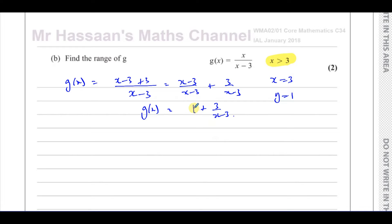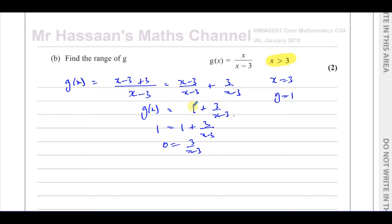y can't equal 1. If y equals 1, you have 1 equals 1 plus 3 over (x minus 3). When you subtract 1 from both sides, you end up with 0 equals 3 — a contradiction. So that's why y can't equal 1. Anytime you have this improper type of fraction, whatever number you get when you divide the coefficients is going to be the horizontal asymptote. That's how we know y equals 1 is the horizontal asymptote and x equals 3 is the vertical one.